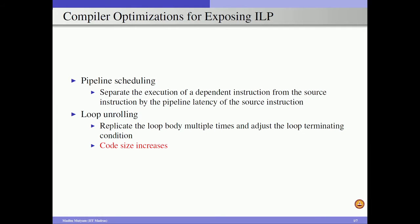The second optimization is loop unrolling. Here the loop body is replicated multiple times, so we have more instructions in the loop body. As a result, we can apply pipeline scheduling, find more independent instructions, and minimize stalls significantly.